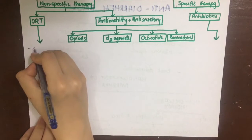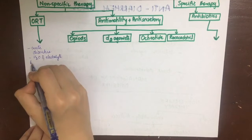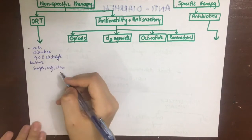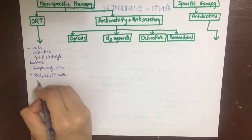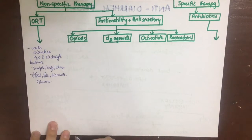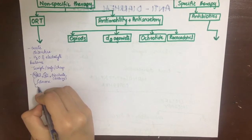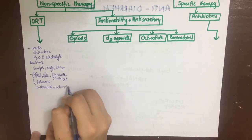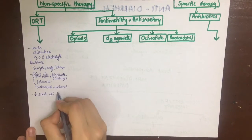Oral rehydration therapy is mainly used to treat acute diarrhea and to restore water and electrolyte balance. It is a simple, safe, and cheap method. The oral rehydration solution contains NaCl, potassium chloride, sodium citrate, and glucose. NaCl and potassium chloride restore the losses of sodium and potassium; sodium citrate, being a base, corrects the acidosis; while sodium and glucose are co-transported in the ileum by the sodium-glucose co-transporter. As a whole, it decreases stool volume and vomiting.